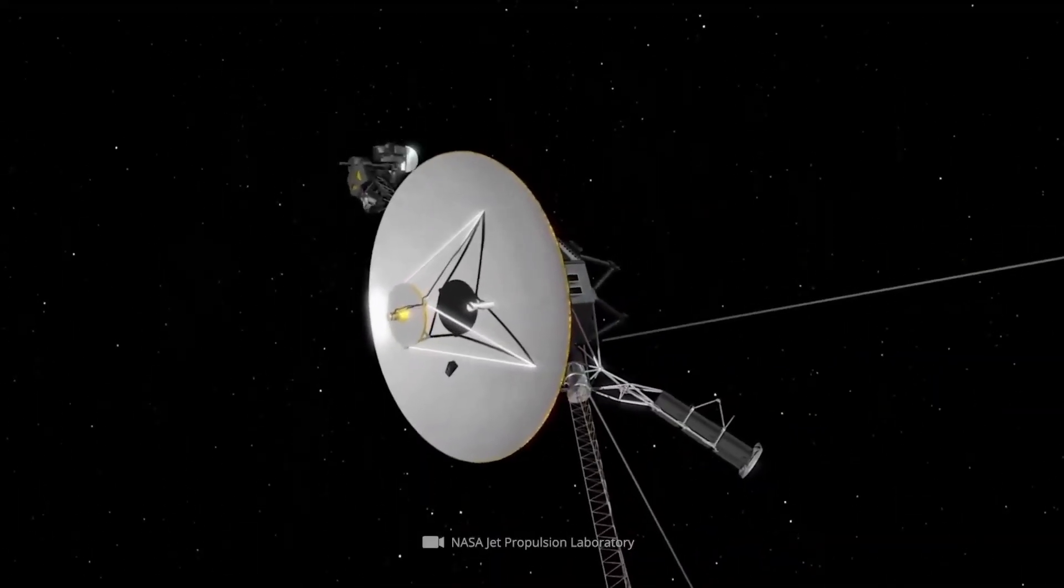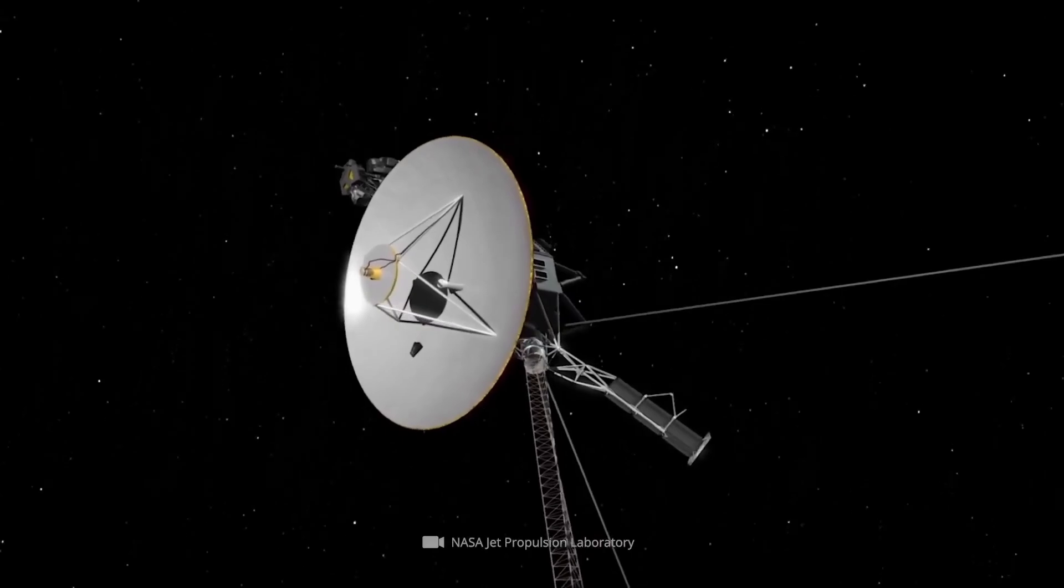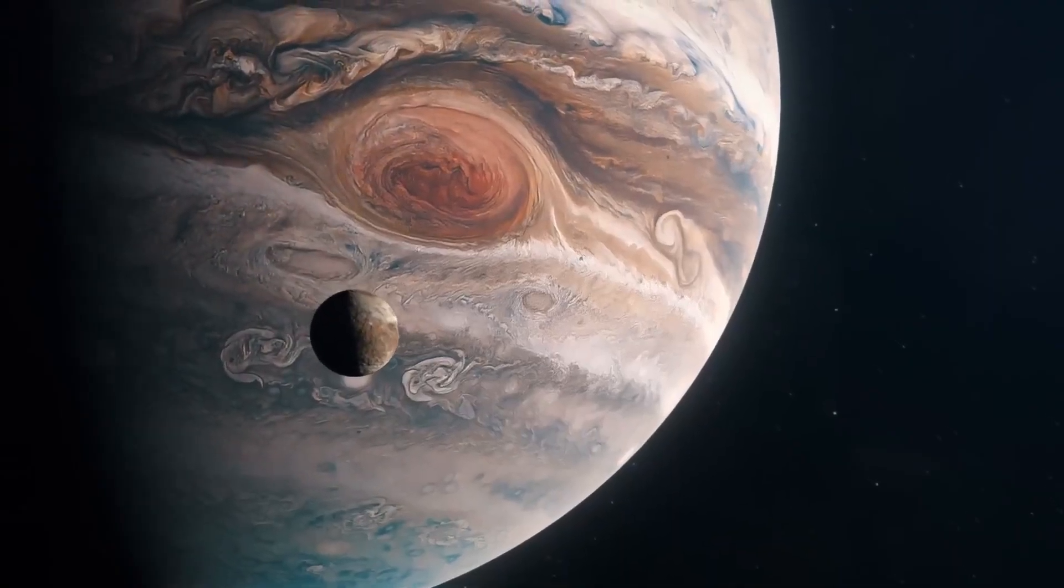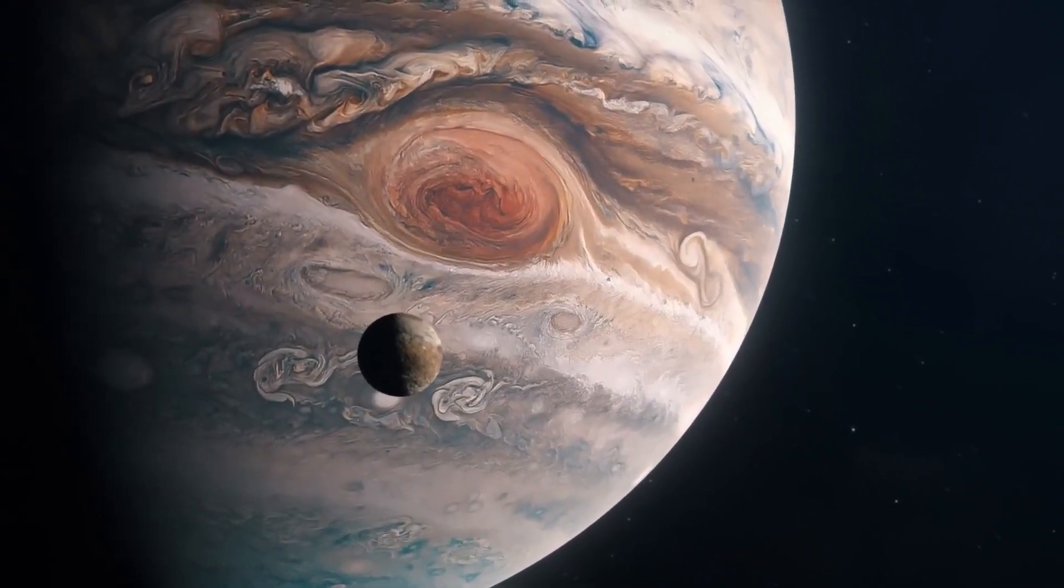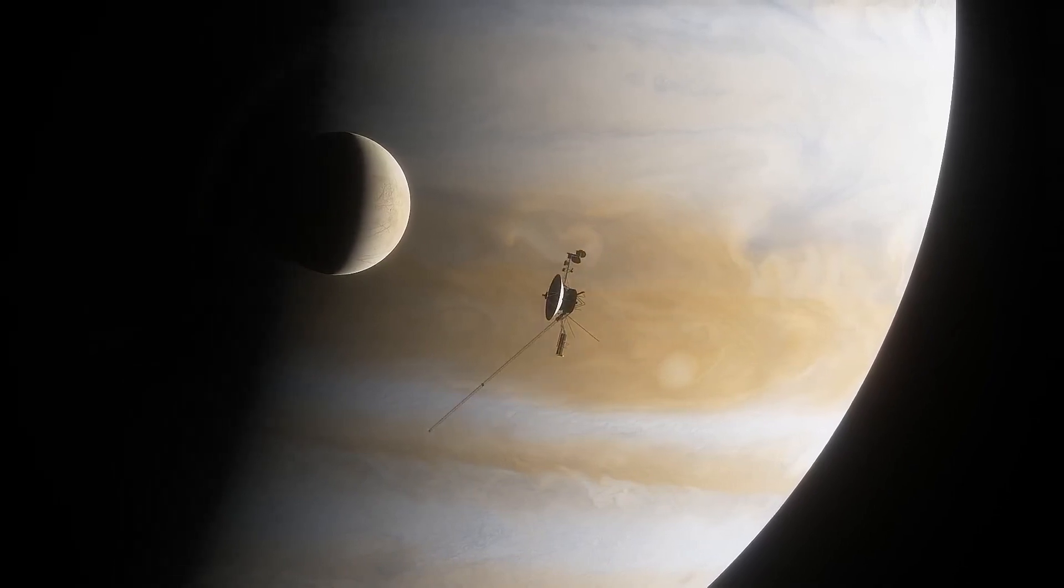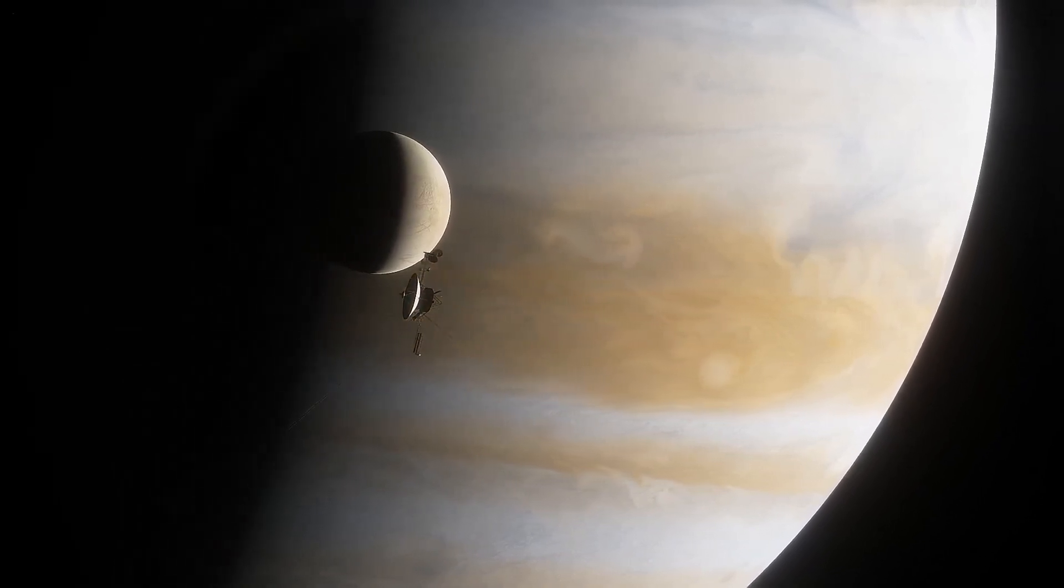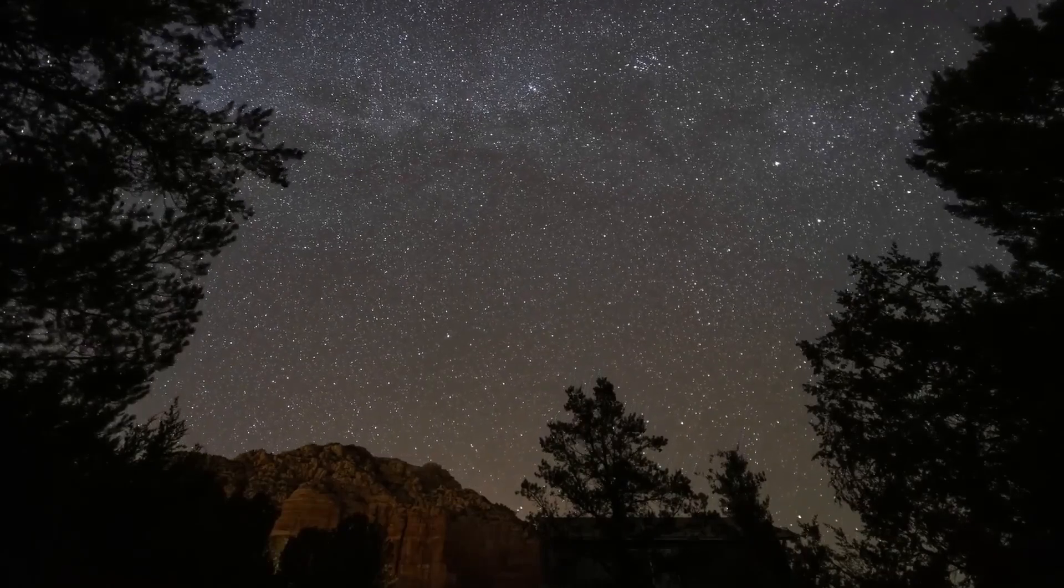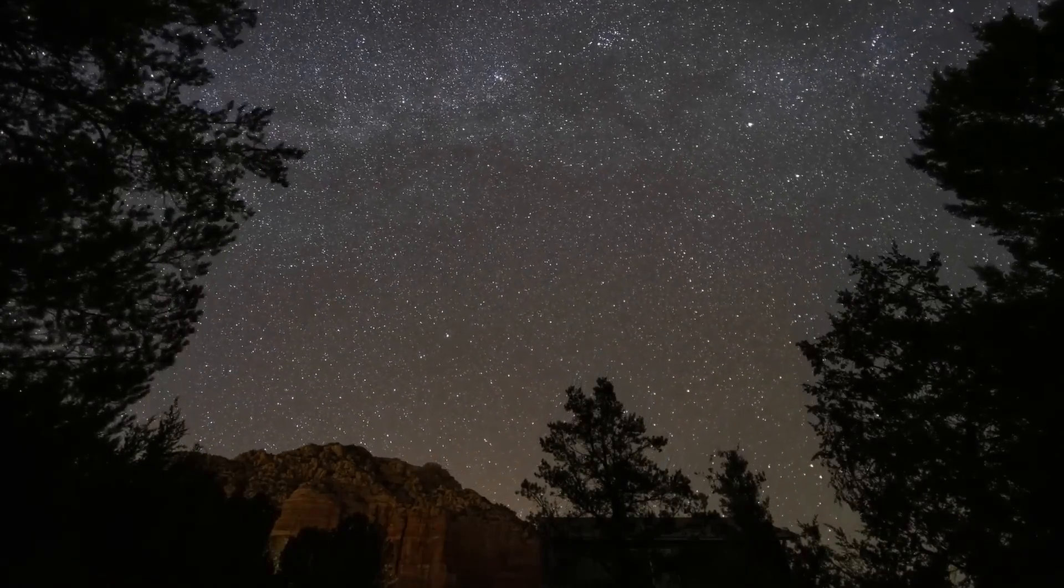This alignment created what was essentially a celestial necklace linking Earth to the outer solar system. This made it possible for a spacecraft to gain speed using gravity assists from each planet, a clever trick where the craft slingshots around a planet and borrows some of its orbital energy. This gravitational boost would cut down the time needed to reach Neptune from 30 years to just 12.